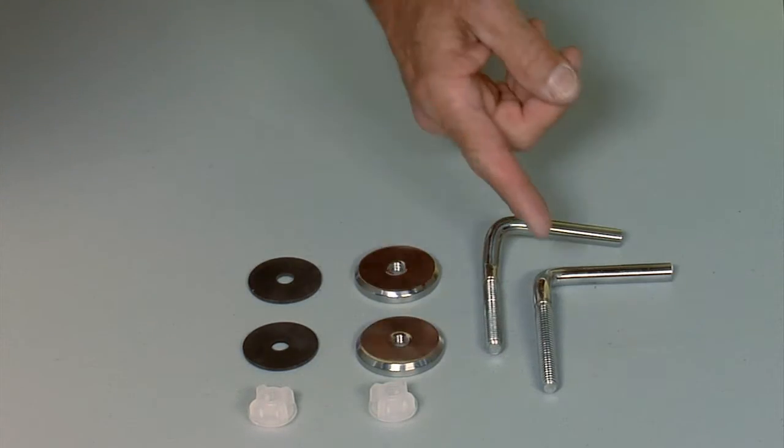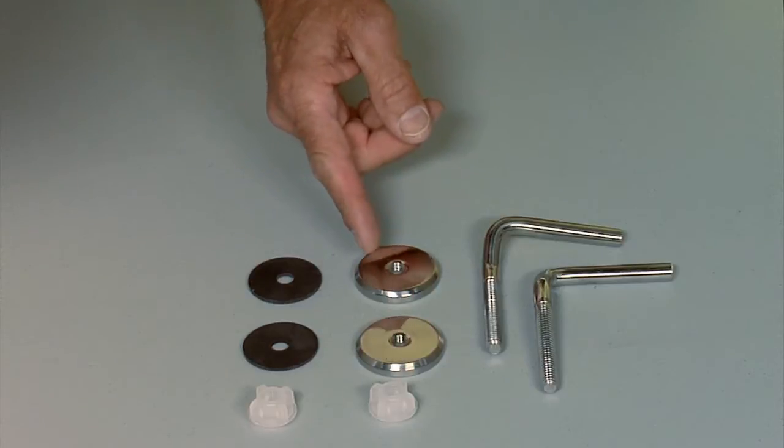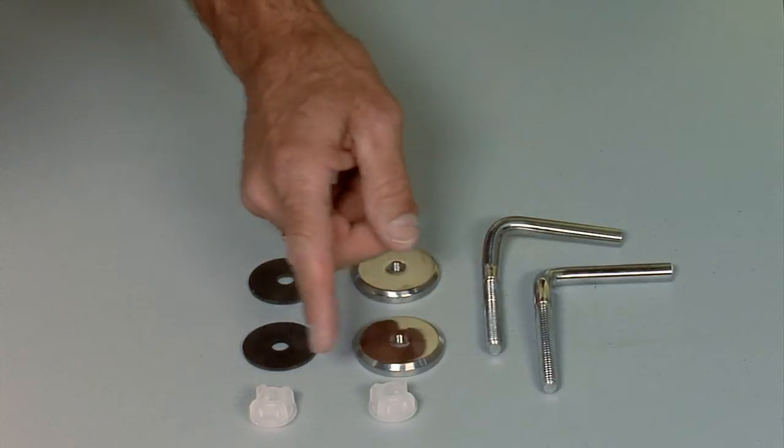The hardware pack consists of two hinges, two flanges, two washers, and two nylon nuts.